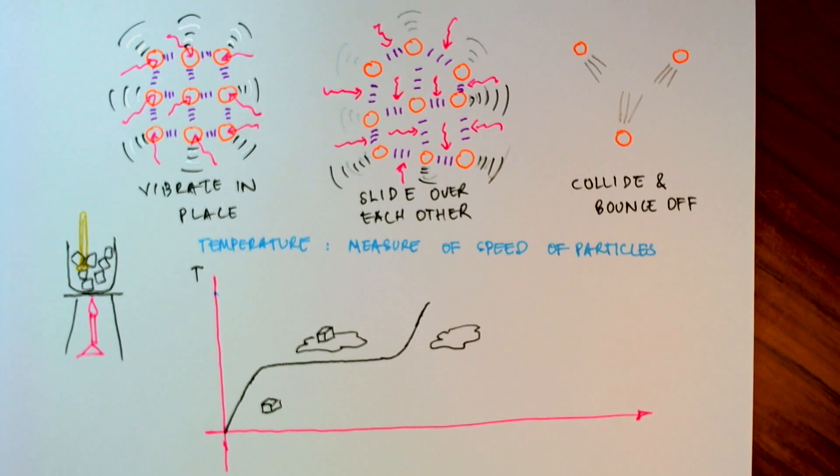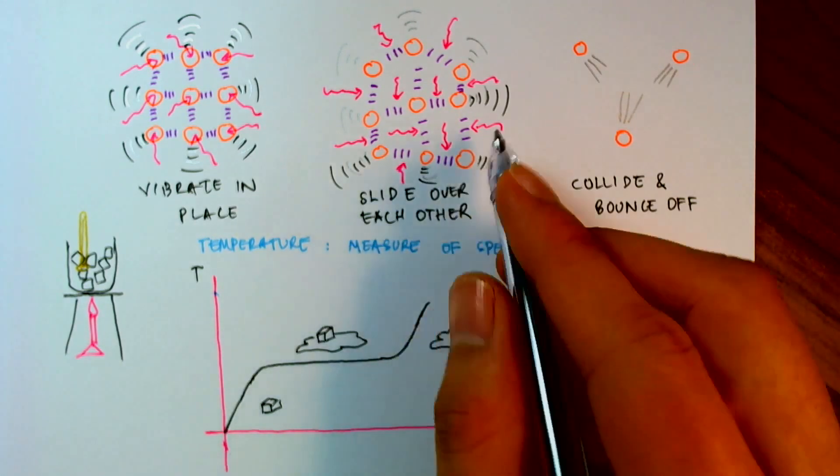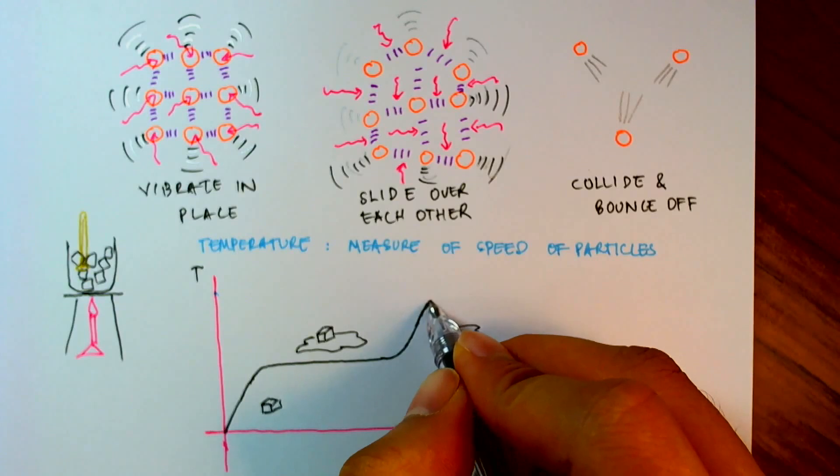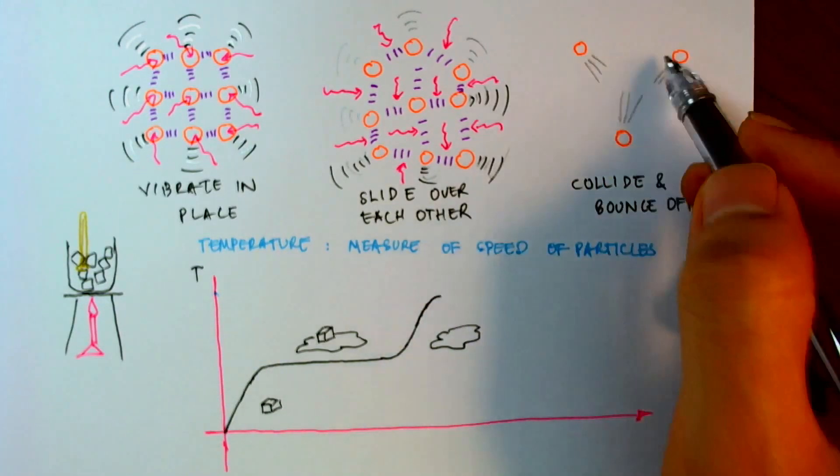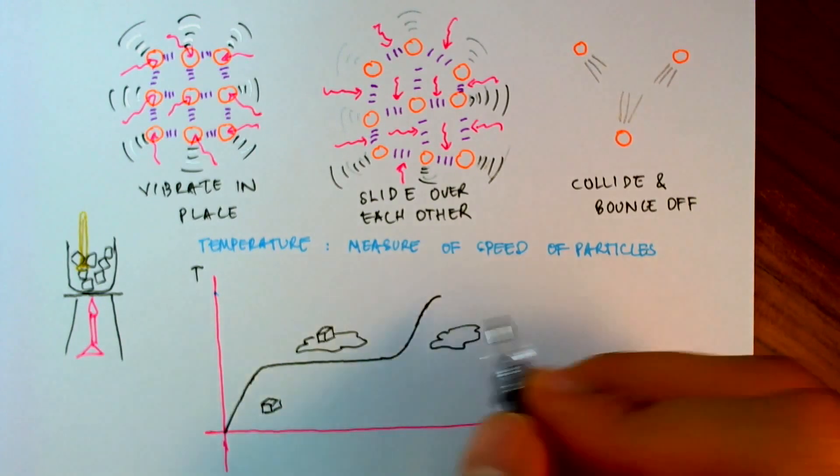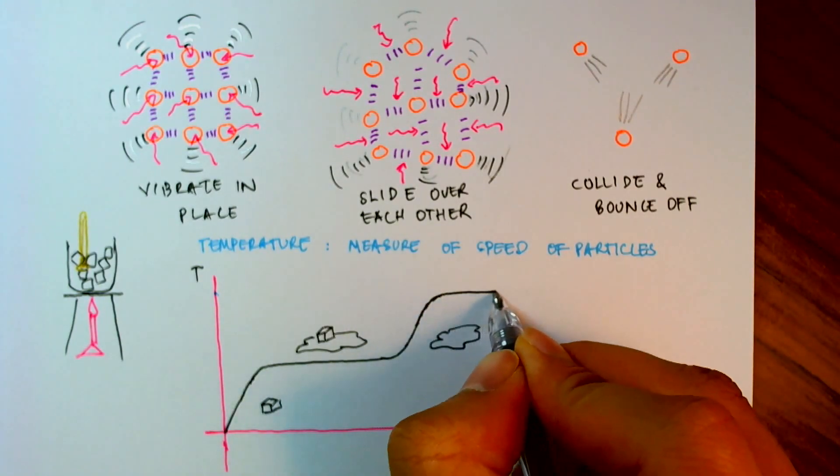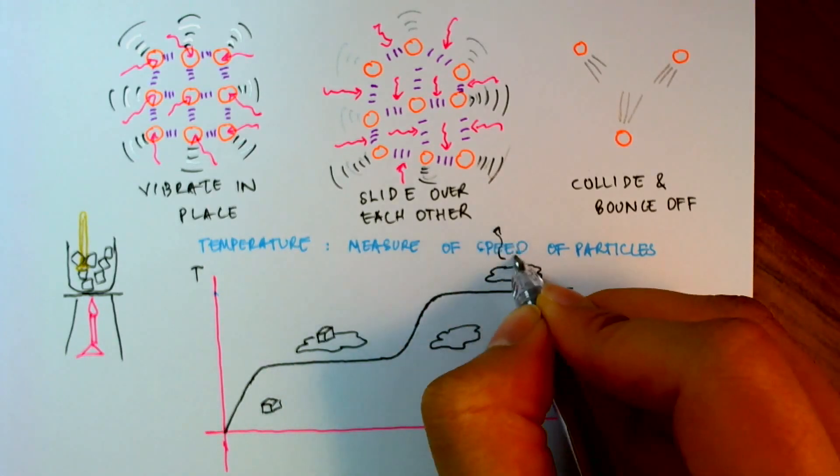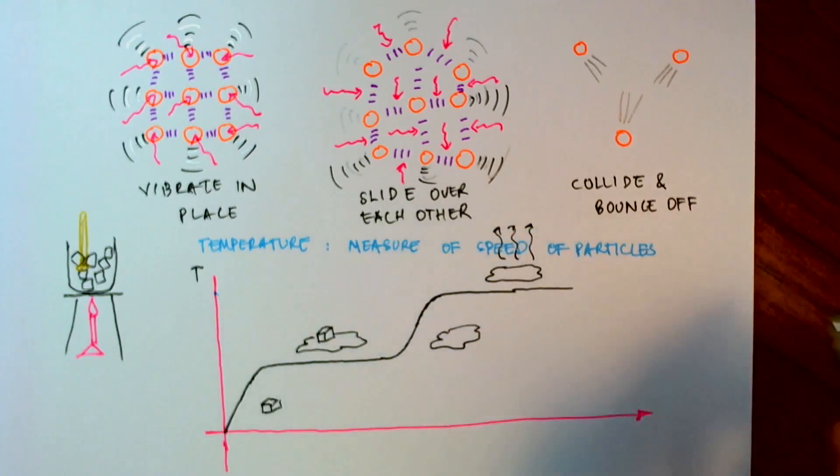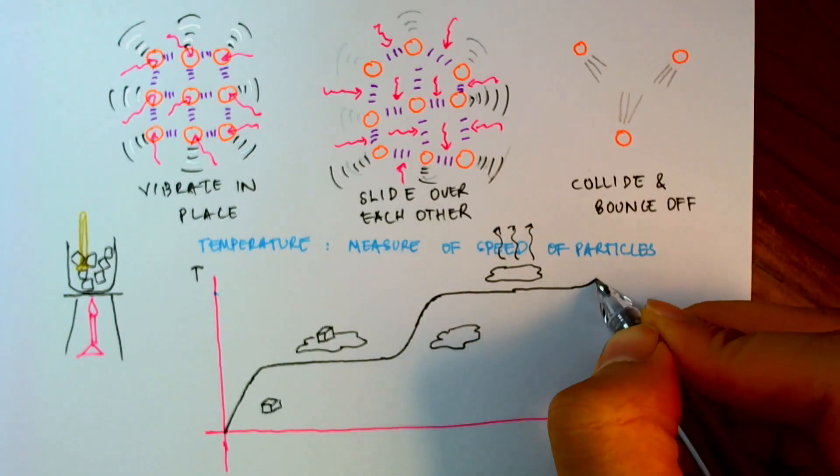Until, again, the liquid wants to change into a gas. When it reaches this stage, once again, we'll need to weaken the bonds between them. And as you can see, there are no forces between the particles. So a lot of this energy is being absorbed to weaken the bonds between the particles, causing it to evaporate.